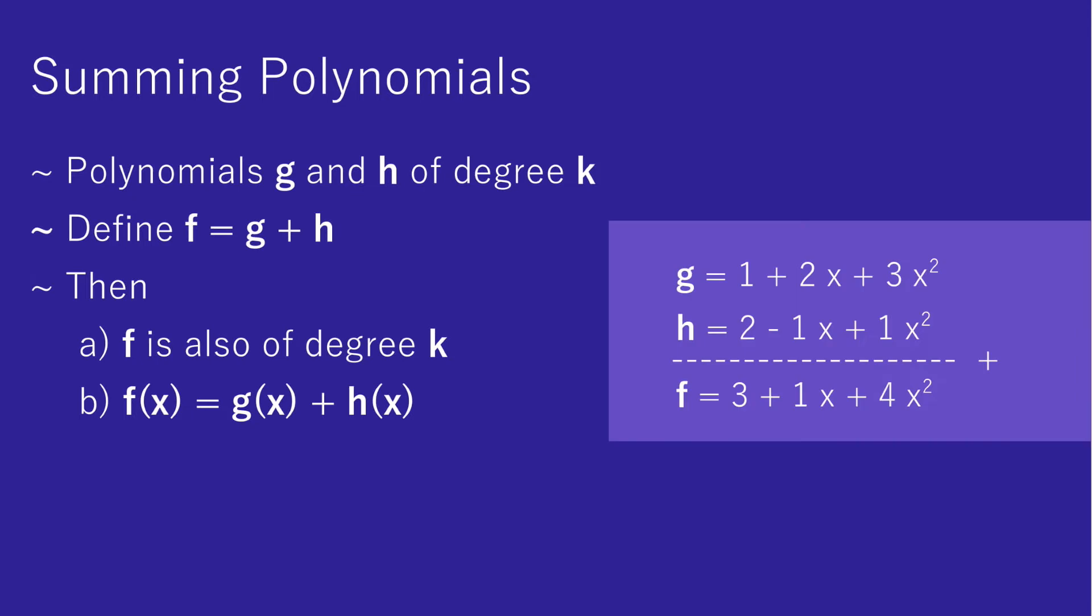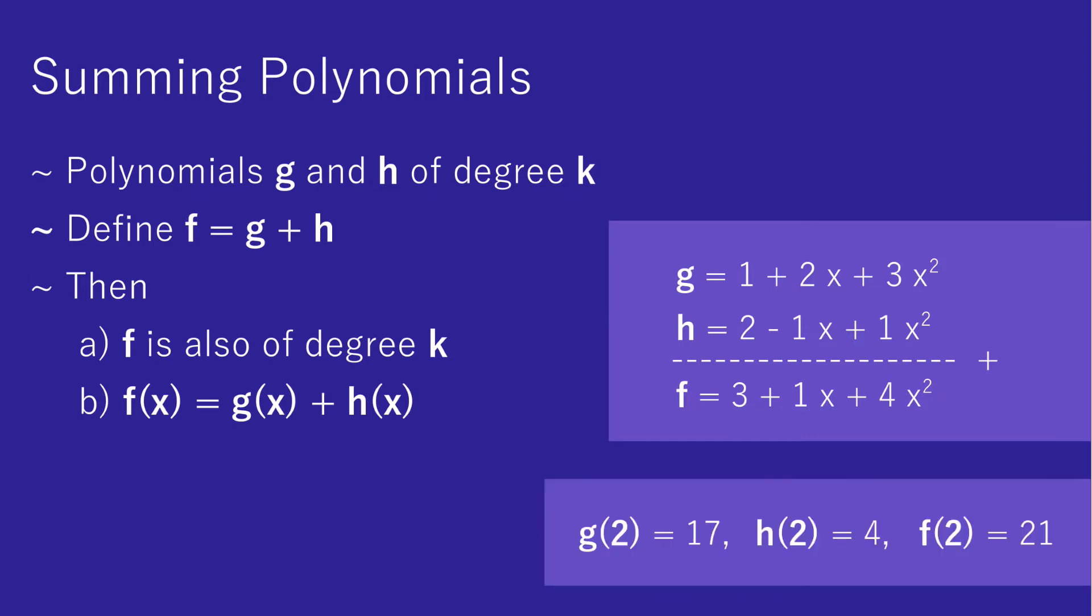And those properties are quite easy to see. For example, when summing two polynomials, it is quite clear that no higher degree such as x to the power of 3 or 4 are introduced, since this would only happen if we were to multiply with x at some point. Also, the second property is quite straightforward.